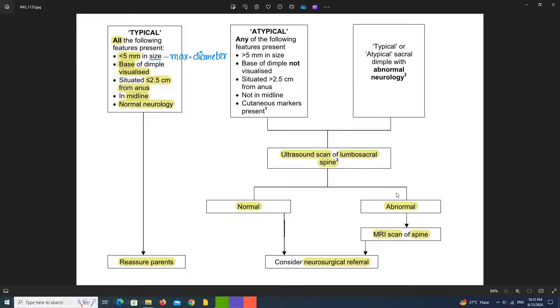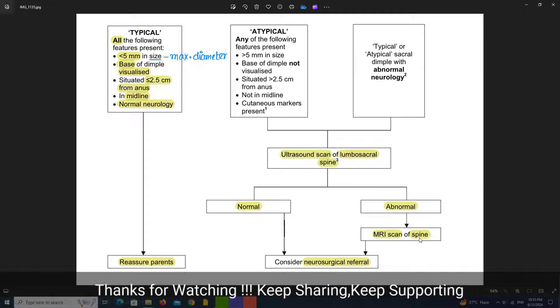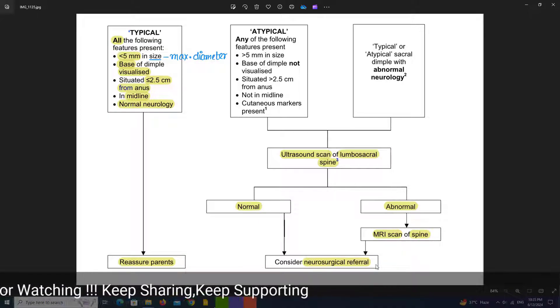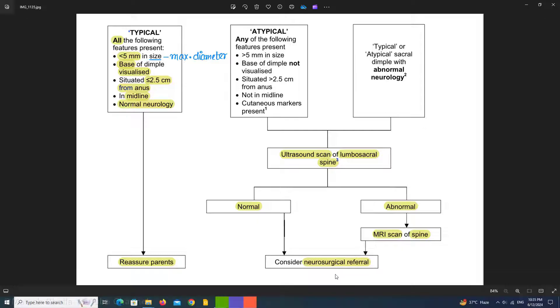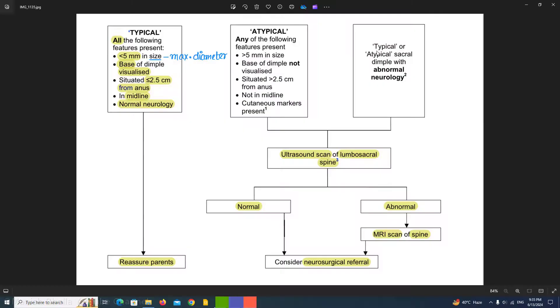But if it is abnormal, then the next investigation that we will be doing is MRI scan of spine, and we may also think of referring the child to neurosurgical center for further evaluation.